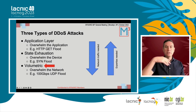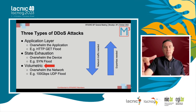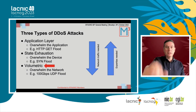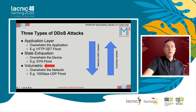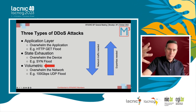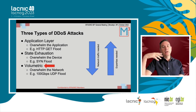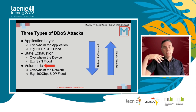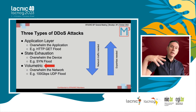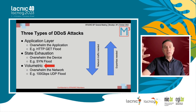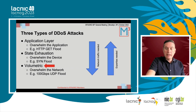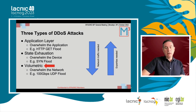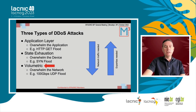We're going to discuss specifically volumetric DDoS attacks. There are really three types of DDoS attacks. You have application layer attacks, where the attacker is overwhelming an application, like doing a flood of HTTP GET traffic. There are also state exhaustion attacks, where the attacker is overwhelming a device that is keeping state — a SYN flood is a common instance of that. And then there are volumetric attacks, where the attacker is overwhelming the network.